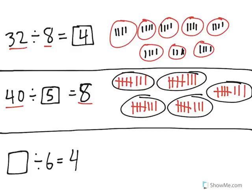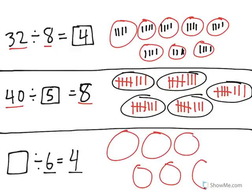And the last one, we're missing our dividend. That means we know how many groups it's split into, and we know how many are in each group. So we have 6 groups, and we end up with 4 in each group. So when I represent this, you'll see it's actually like a multiplication problem. We have 6 groups of 4, which means that we started with 24. That's how you find the missing number in the division problem.